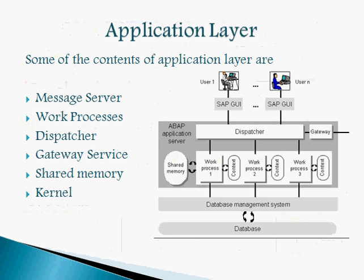The Application Layer is where application programs are executed. It contains a kernel written in C or C++ that serves as a platform for application programs. The Application Layer contains the following components: message server, work processes, dispatcher, gateway service, shared memory, and kernel.